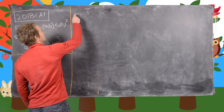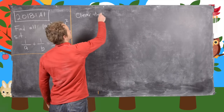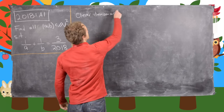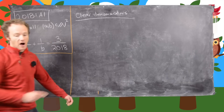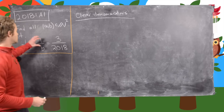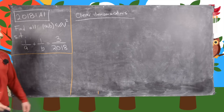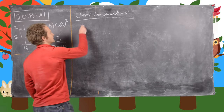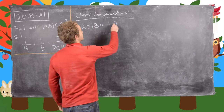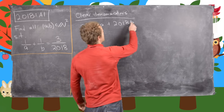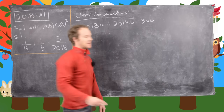The first thing we're going to do is clear denominators, and that's going to give us the following equation. We're going to multiply both sides of the equation by 2018·A·B, so that gives us 2018A + 2018B = 3AB.